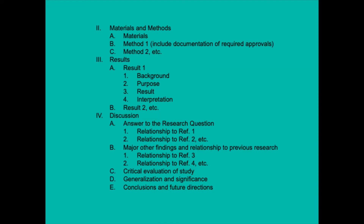This outline continues. Part two is materials and methods, broken down into materials, method one, method two — and for each method you need to include documentation of any required approvals for certain protocols or project methods. Part three is results, and it's a good idea to break results down by a four-part repeating pattern where you discuss the background, the purpose, the results, and if necessary, an interpretation of the result.